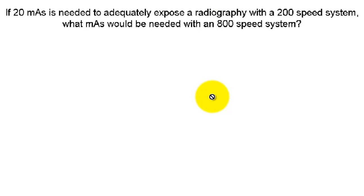If 20 mAs is needed to adequately expose a radiograph with a 200 speed system, what mAs would be needed with an 800? So you're going from a slower speed system to a faster, so you know you should probably need less mAs. So let's just write out our formula again.